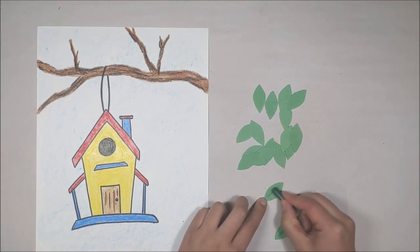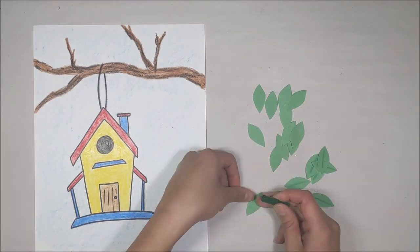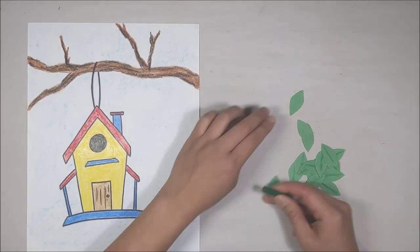Taking a green color, add the line in the middle of each leaf to create that leaf vein.